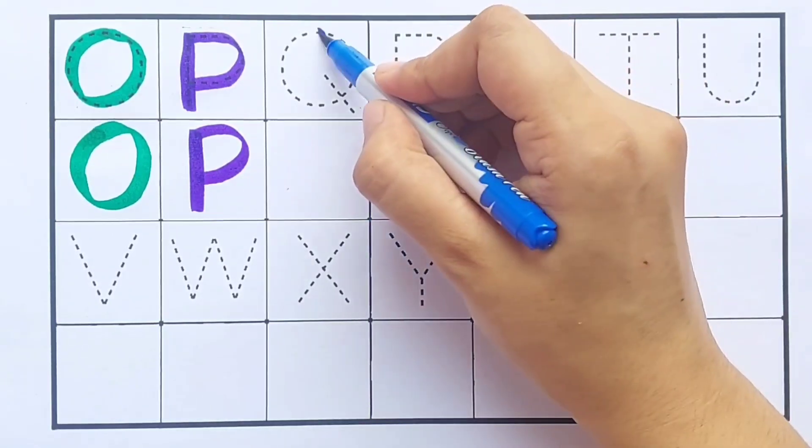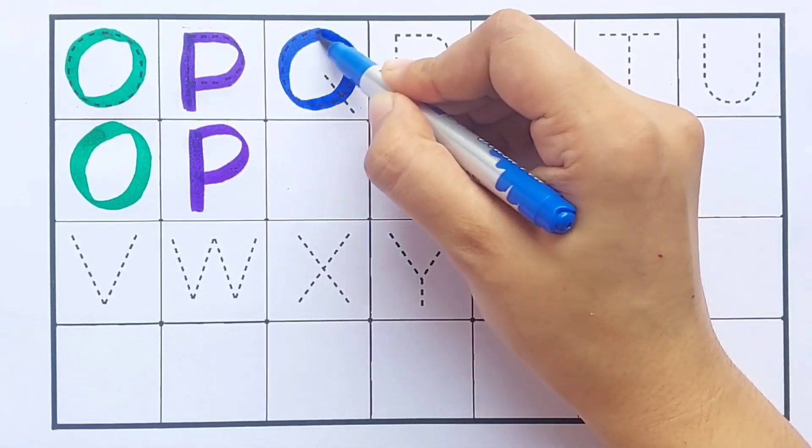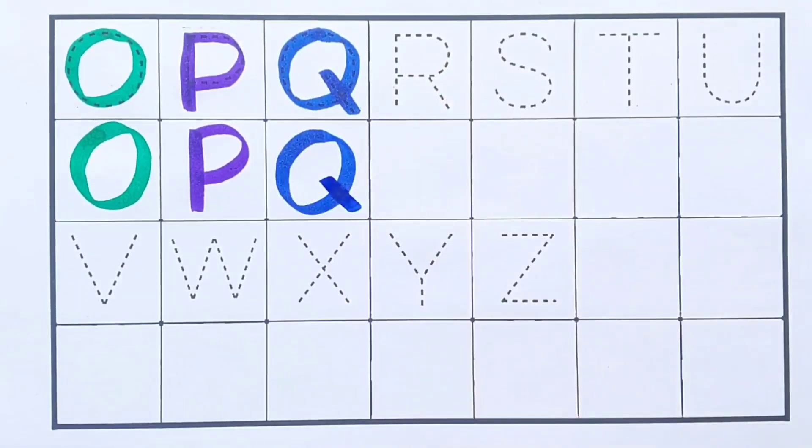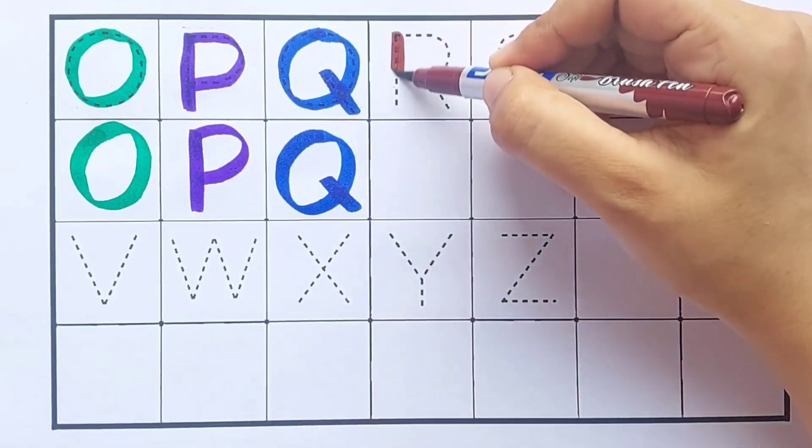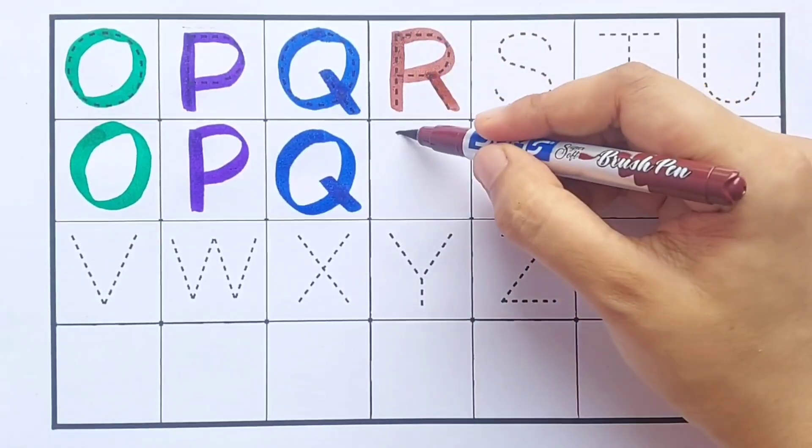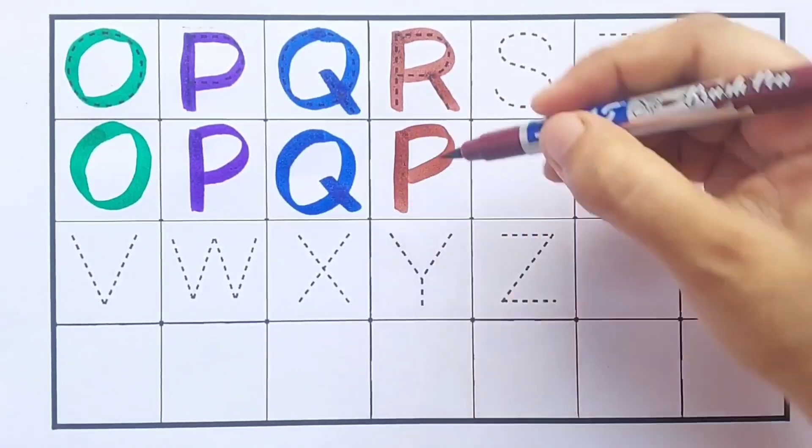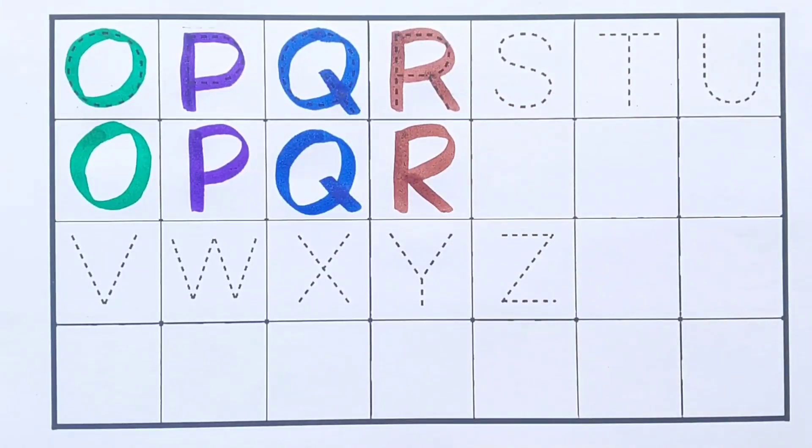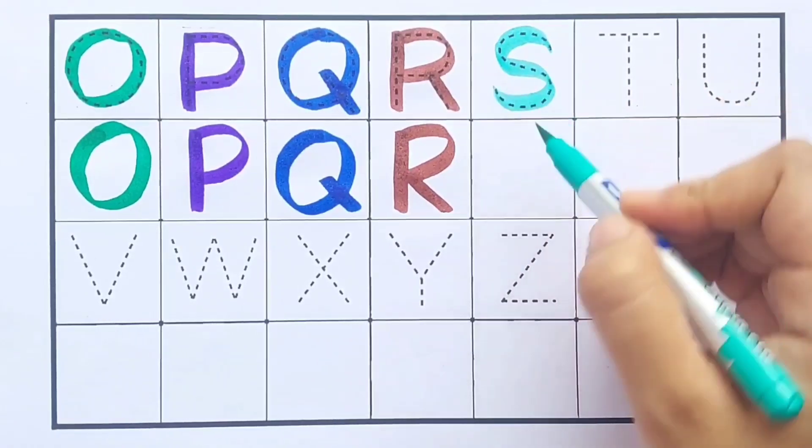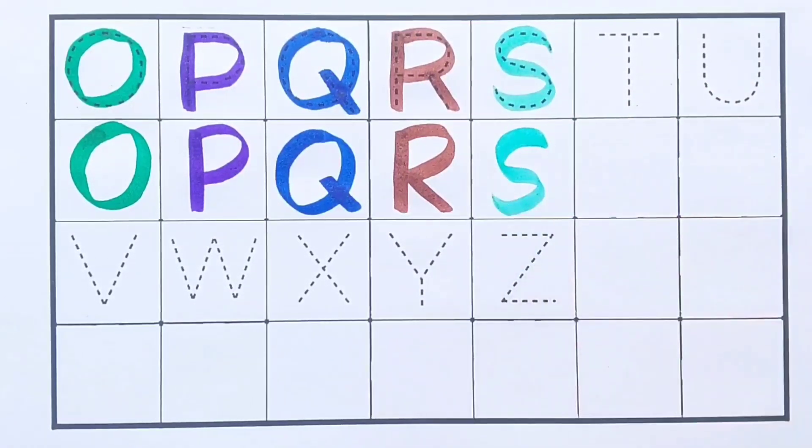Blue color, Q. Q for quilt. Brown color, R. R for rose. Sea green color, S. S for sun.